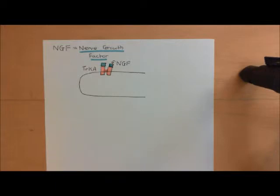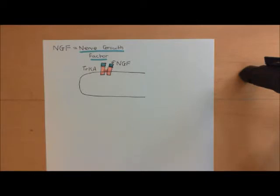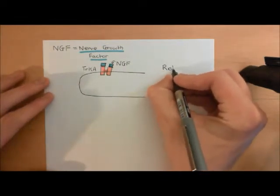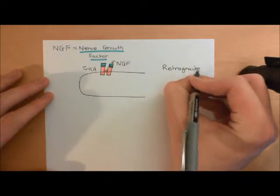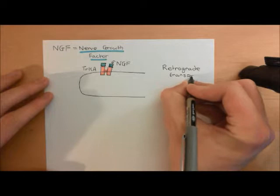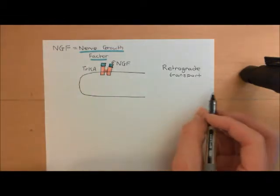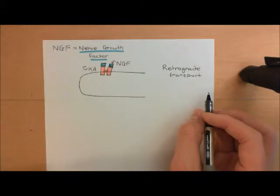This TrkA dimer is currently right down in the periphery, on the membrane of this free nerve ending. If it is going to affect gene expression, it needs to be up near the nucleus of this cell — all the way up in the dorsal root ganglia — so it's not going to be able to set off the cascade from right down here. What actually happens is a phenomenon termed retrograde transport, which involves the TrkA dimer being endocytosed into an endocytic vesicle, and this vesicle being transported up the axon of the primary nociceptive afferent all the way up to the cell body, where it then has its signaling cascade.